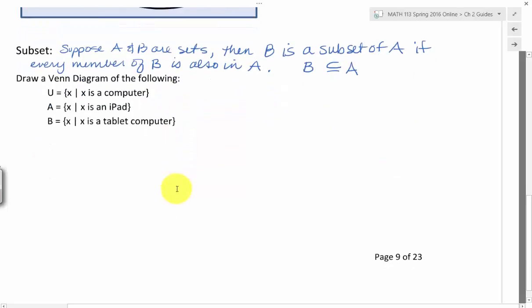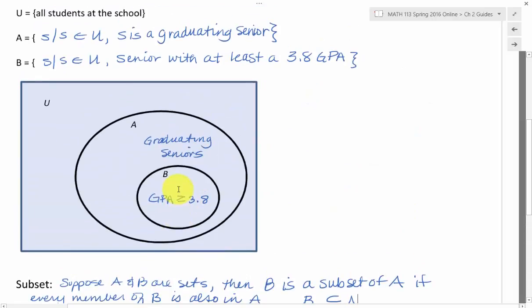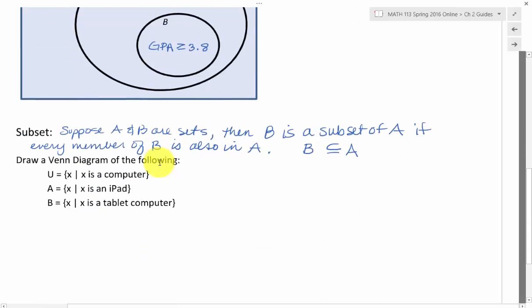And here's an example where we might have a subset again. Remember, this is a subset because the seniors with a GPA of 3.8 are part of this bigger set of graduating seniors, and they could have any GPA. But this is completely contained within this set A. Therefore, it's a subset.